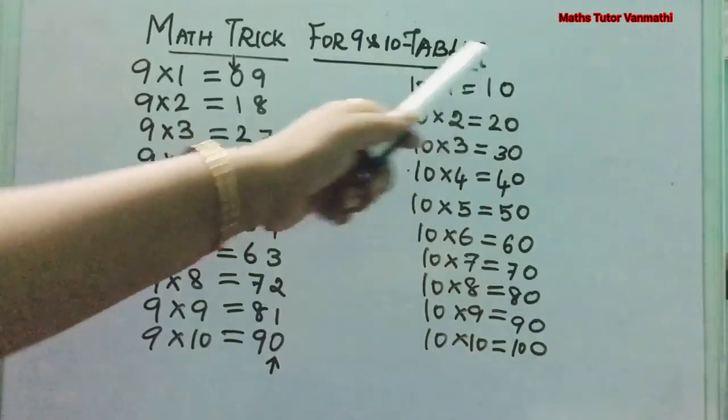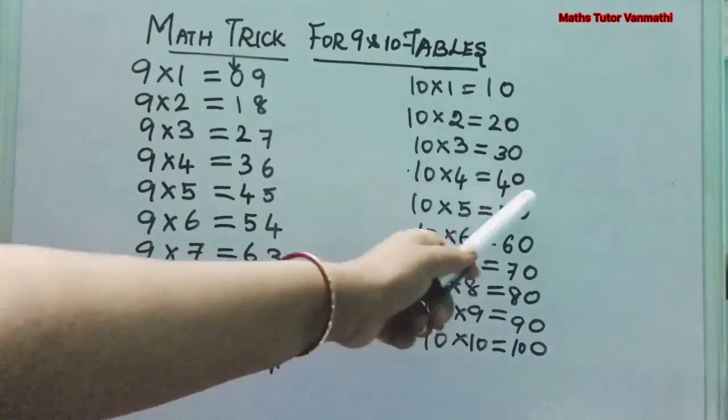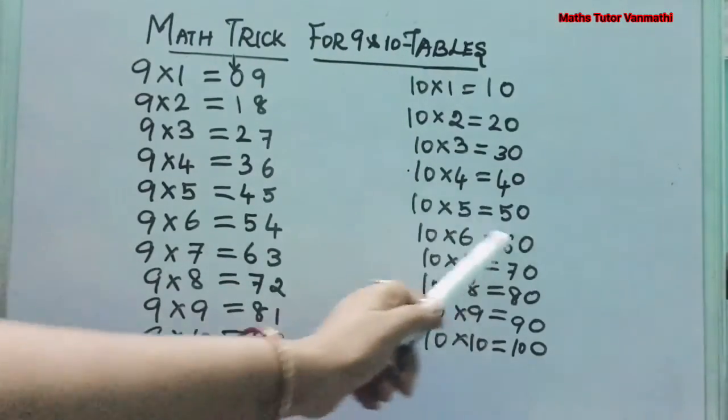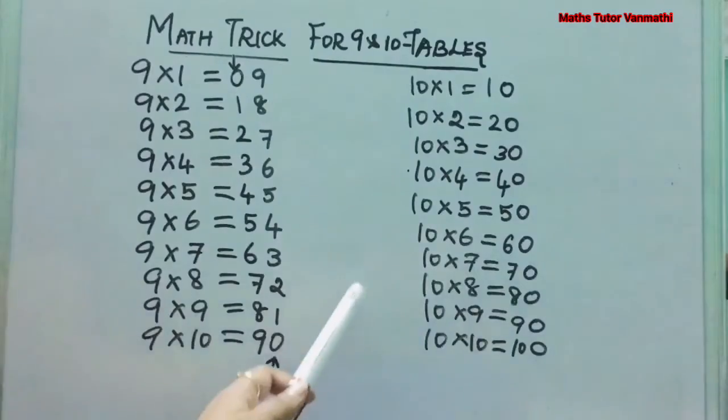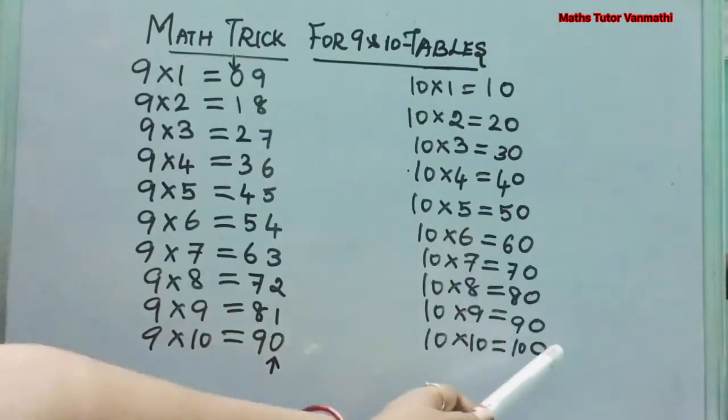10 1s are 10, 10 2s are 20, 10 3s are 30, 10 4s are 40, 10 5s are 50, 10 6s are 60, 10 7s are 70, 10 8s are 80, 10 9s are 90, 10 10s are 100. That's it.